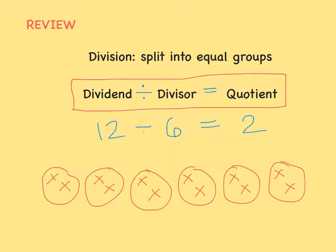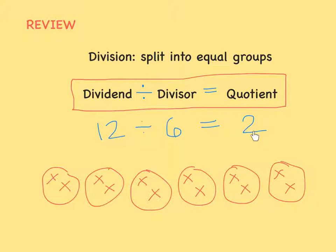We already know that division is when you split a number into equal groups. The dividend is the bigger number you're dividing, the divisor is the number of groups it's being split into, and the quotient is the number in each group.